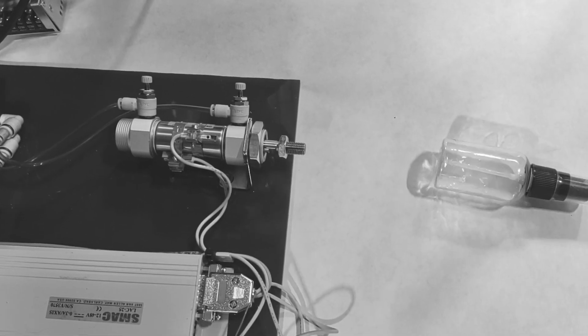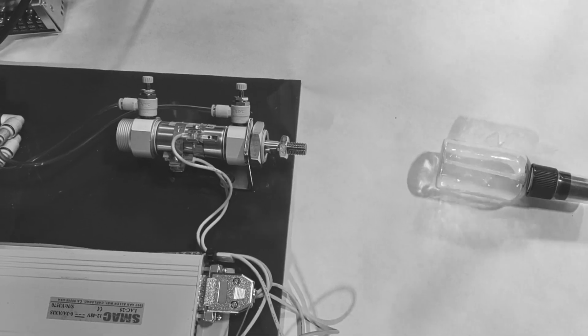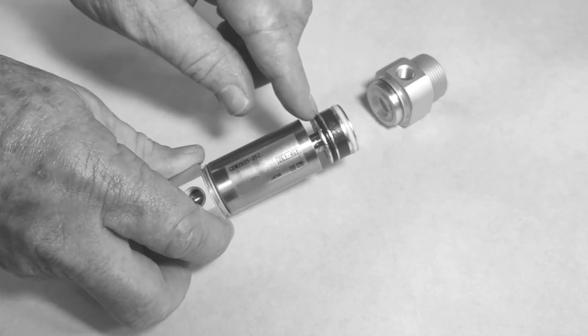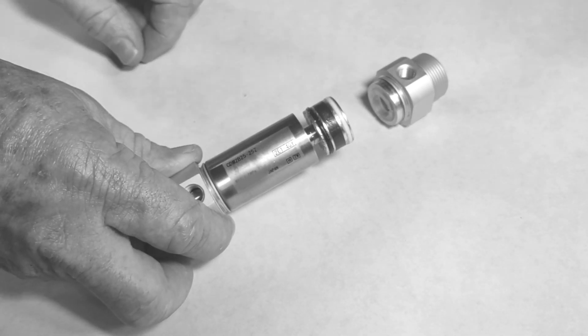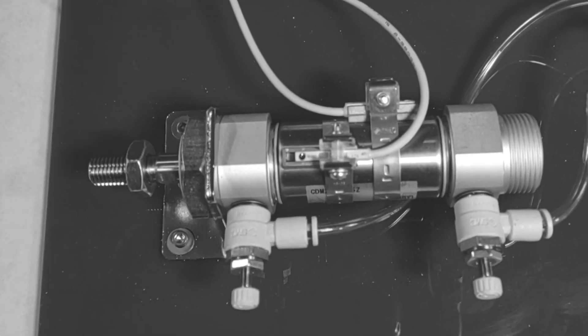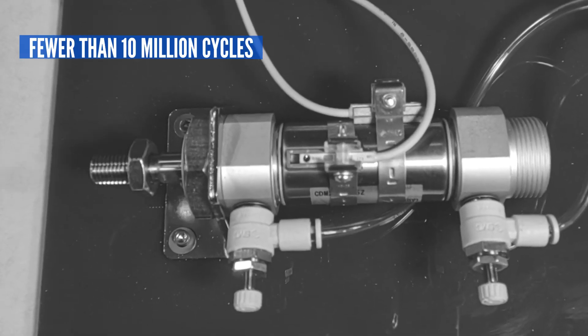Air cylinders hit at full speed. The shock at the end of the stroke is transmitted to the internal dynamic seal, causing it to leak or wear out prematurely. This usually happens before fewer than 10 million cycles.